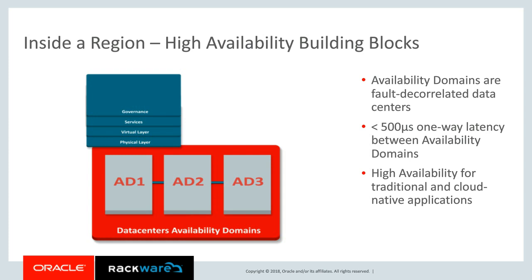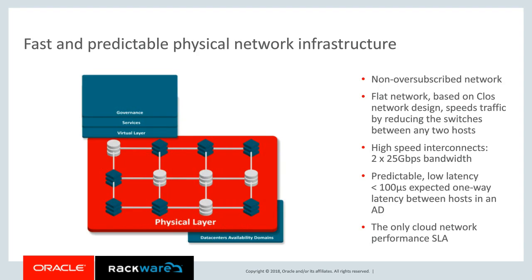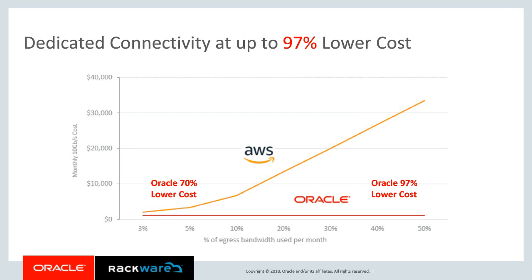Even if an entire availability domain goes down, nothing happens to your application. Each availability domain is made up of one or multiple data centers. Connecting all regions and availability domains is our high-speed network backbone, built with enterprise requirements in mind — less than 100 microseconds latency between infrastructure components within an AD. A key aspect is being able to spread an application or infrastructure across multiple data centers, including customers' own data centers.